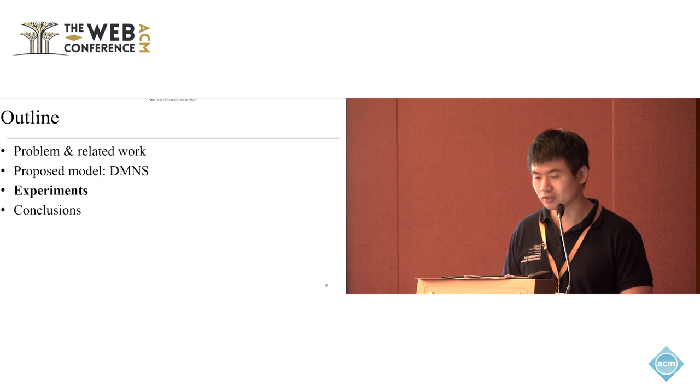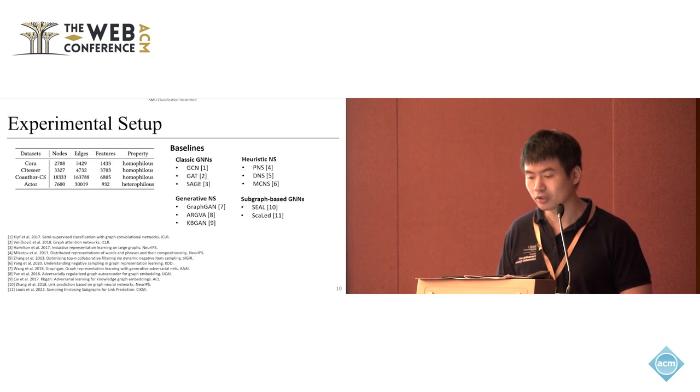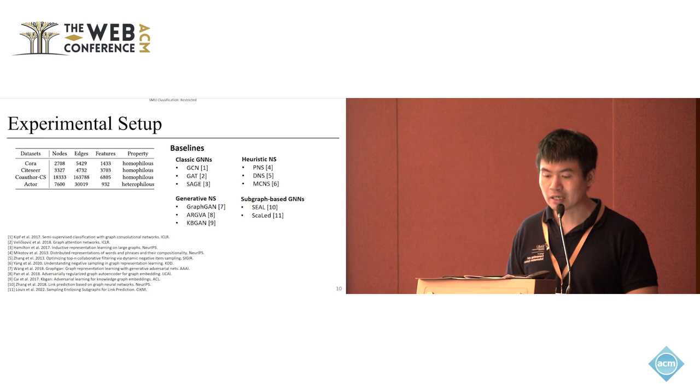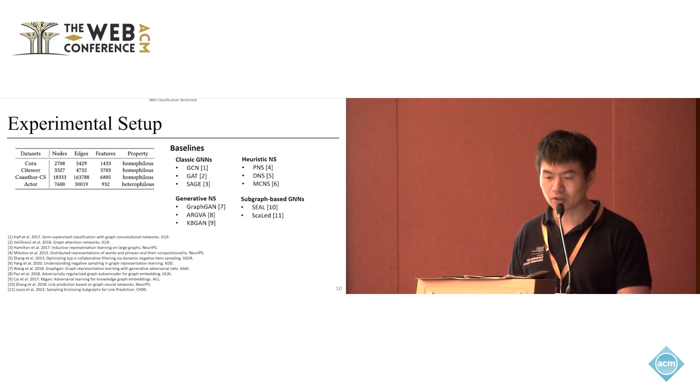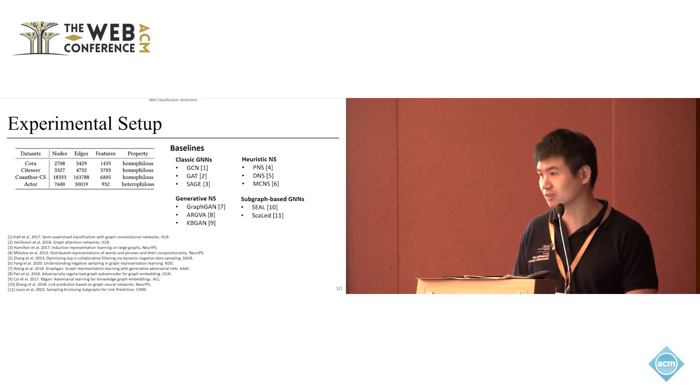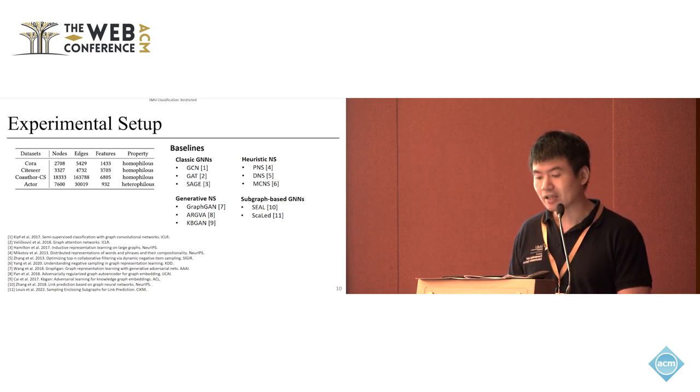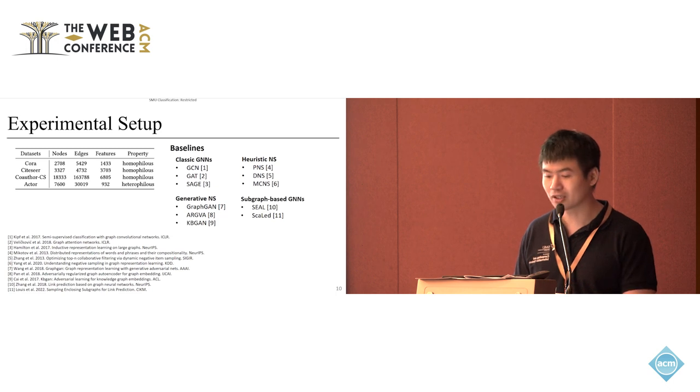This comes to our experiment. We employ a few standard graph benchmarks and we consider four categories of baselines: classic graph neural networks, then heuristic negative sampling methods—for example, PNS is the popularity weighted negative sampling, DNS is some kind of dynamic strategy for negative sampling, and MCNS is a Monte Carlo based method—and then we can see the other generative negative sampling including GAN-based methods. In fact, all three methods here—GraphGAN, ARGVA, and KBGAN—they are all GAN-based.